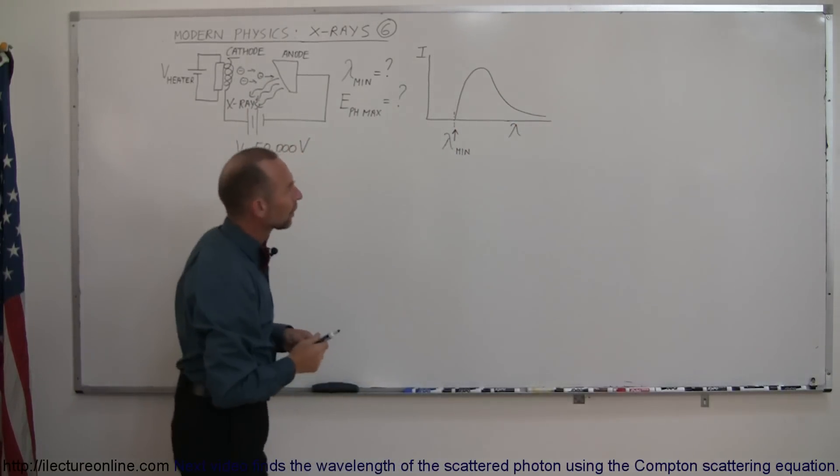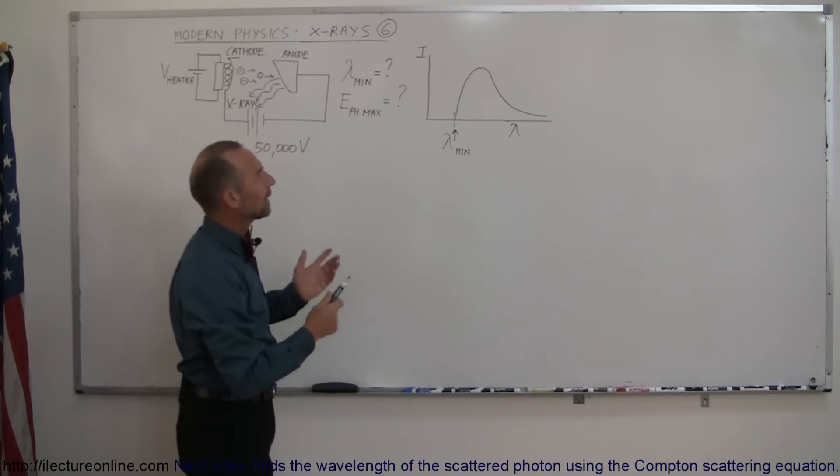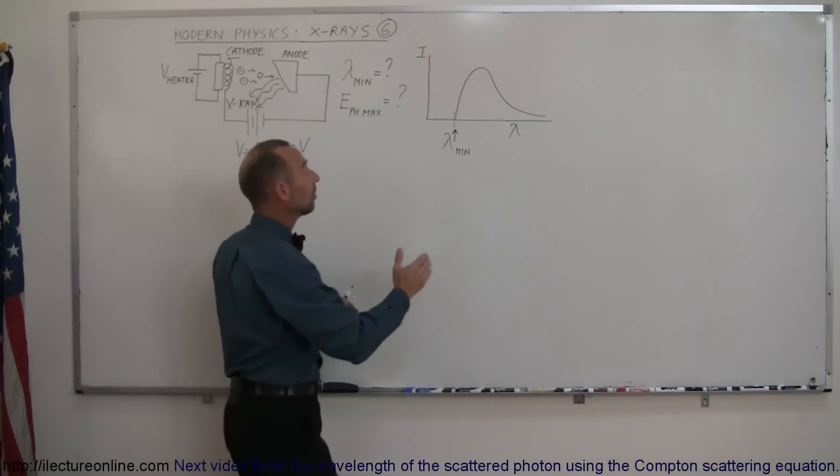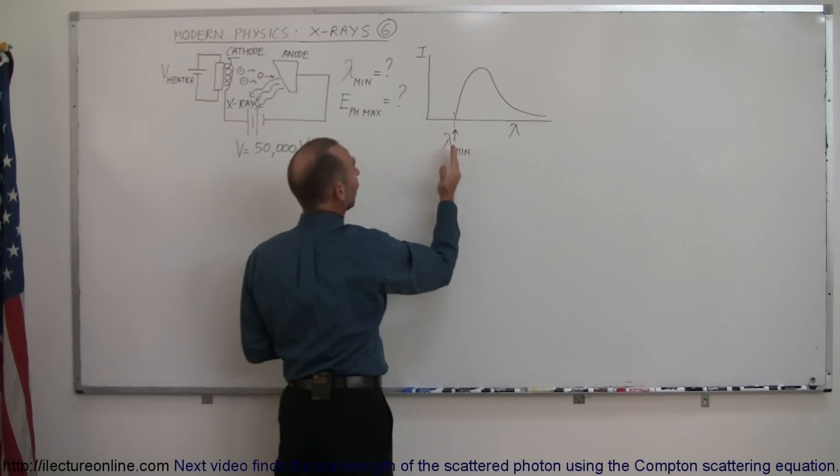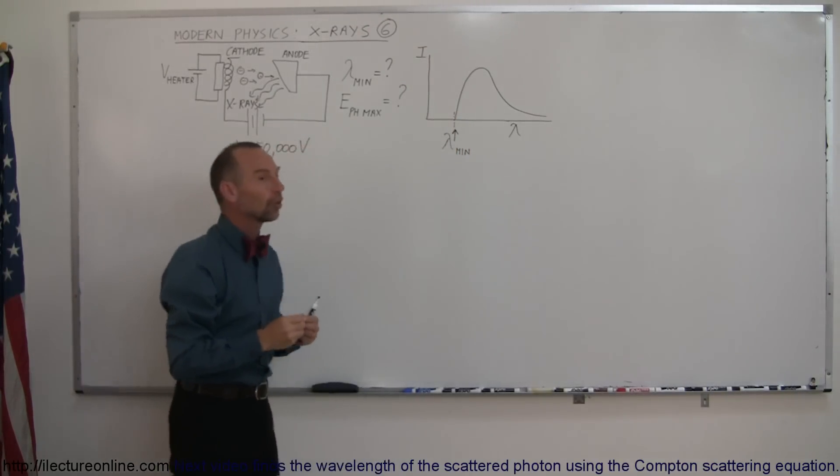It looks a lot like what we call the black body radiation curve, which is exactly what it is. And of course the minimum wavelength would then correspond to the maximum energy that these photons could have.